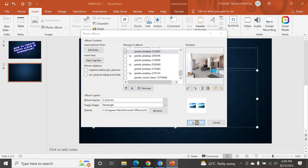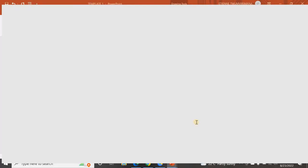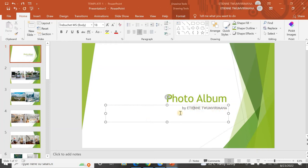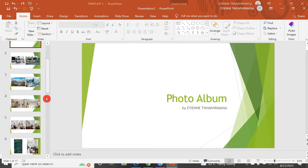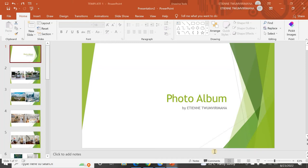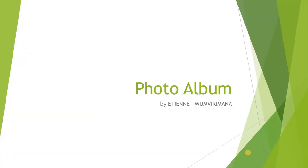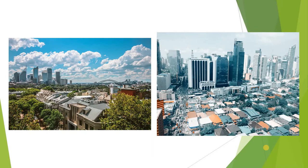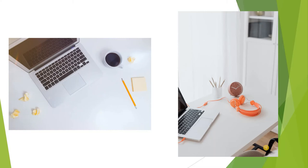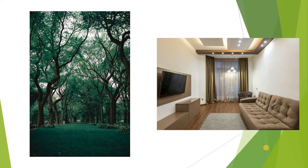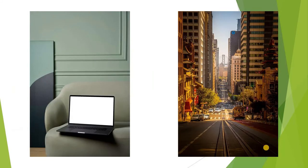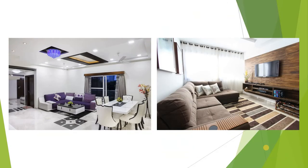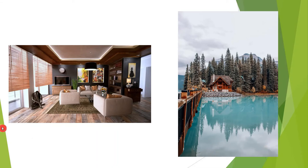Wait a little bit while the album is being created. Now you have a photo album — this is the default name and you can change it. You can see how your album looks. Let me go to Slide Show and see how nice it is. You can see two photos per slide looking very nice. Choose pictures that are equal in size to make them look great.